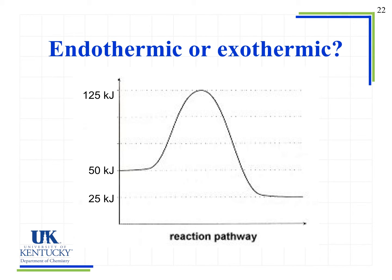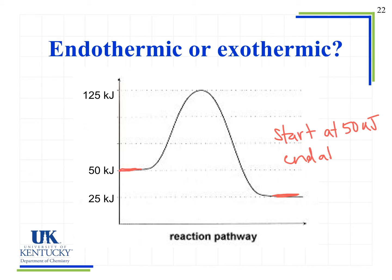Let's clean up that graph and look at a few things in the chart, because there's a lot of information stored there. We see there is some energy of our reactants — in this case we're at 50 kilojoules. The exact values aren't particularly important here at this point. And then we see at our products we have 25 kilojoules. So we start at 50 kilojoules and we end at 25 kilojoules.